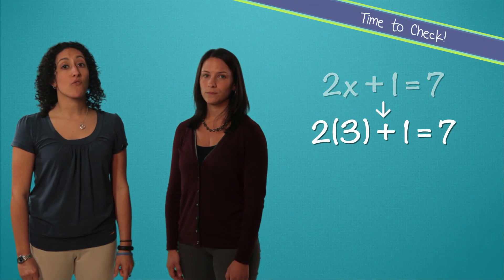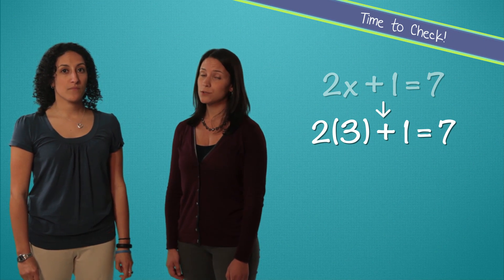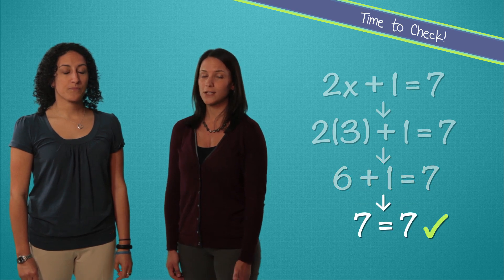To check this we plug 3 into our original equation. 2 times 3 is 6 and 6 plus 1 equals 7. That checks out.